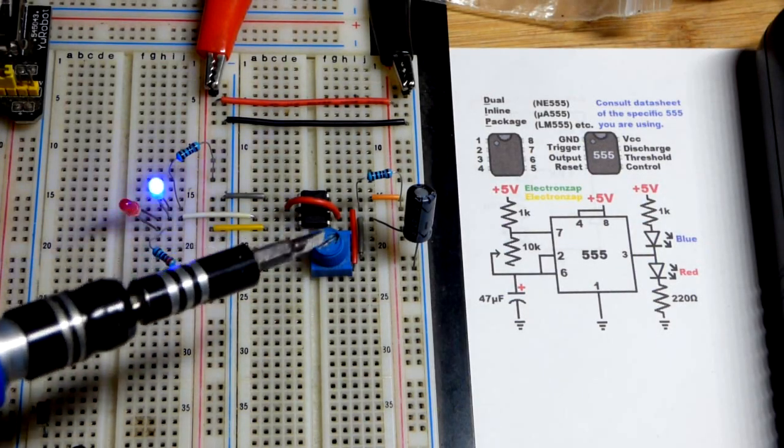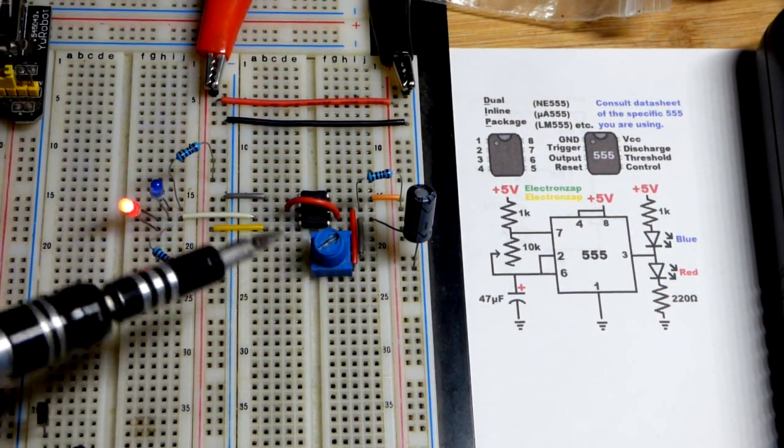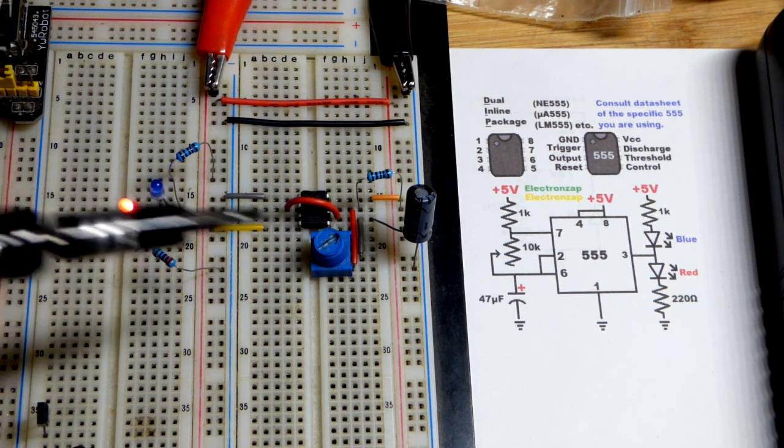So now in this video, we're going to look at a good use for a variable resistor. We have the 555 timer there, wired in astable mode.